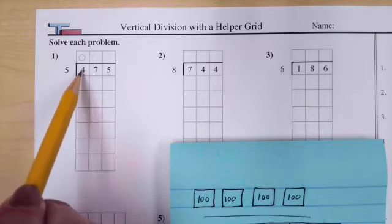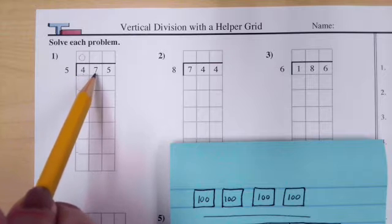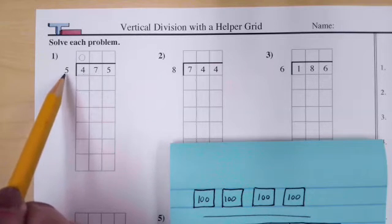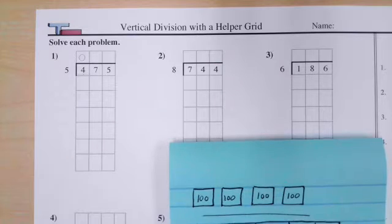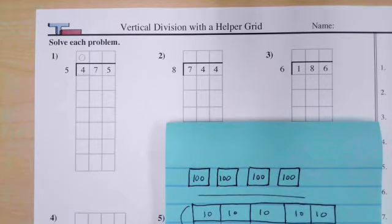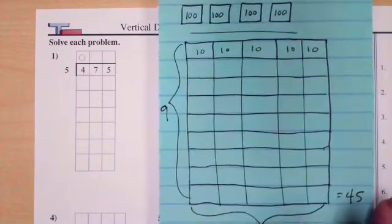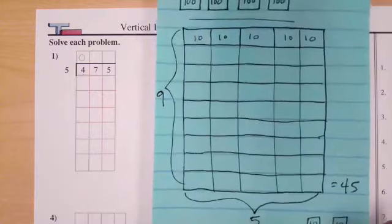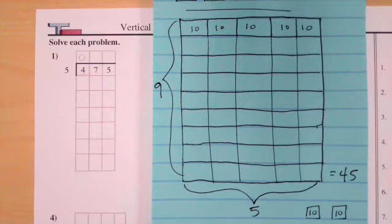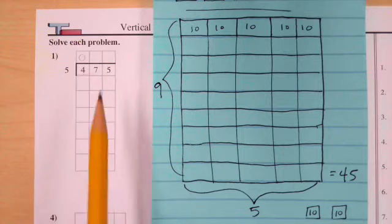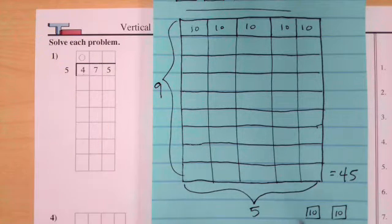Instead, let's look at 47 tens. How many groups of five can we make with 47? One group of five is five, two groups of five is ten — but we have 47 to use, so it's going to be a lot more. You might know your five times tables: five, ten, fifteen, twenty. You might know that nine groups of five is 45. We have enough to make nine groups because we have 47, which is almost 50, and five times ten is 50.